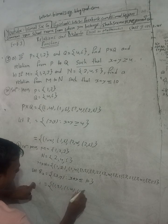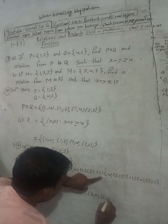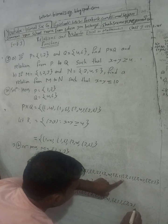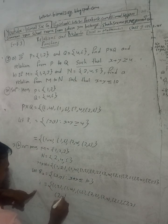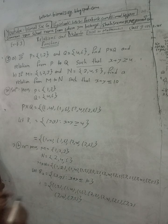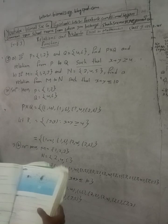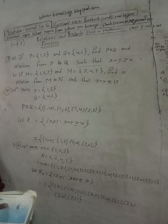The ordered pairs satisfying x plus y ≤ 10 are: (1,4), (1,5), (2,2), (2,4), (2,5), (3,2), (3,4), (3,5).